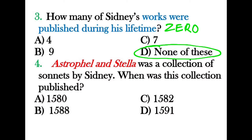Question four: Astrophel and Stella was a collection of sonnets by Sidney. When was this collection published? Since none of his works were published during his lifetime, and Sidney died in 1586, the options 1580 and 1582 cannot be correct. The right answer is 1591 — that is the year when Astrophel and Stella was published.